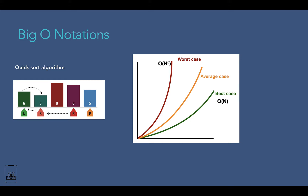In the expected case, which is the average case, sometimes the pivot number will be high, sometimes it will be low, so it will not happen over and over again. This means that in the average case it might take O(n log n) time complexity. Hopefully with this example everything is clear — based on the condition, this sorting algorithm might perform differently.